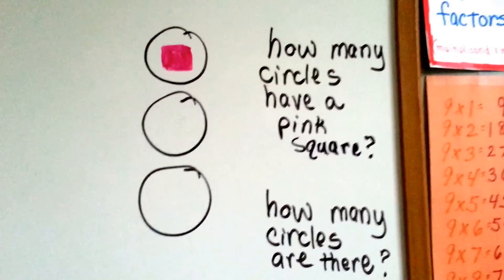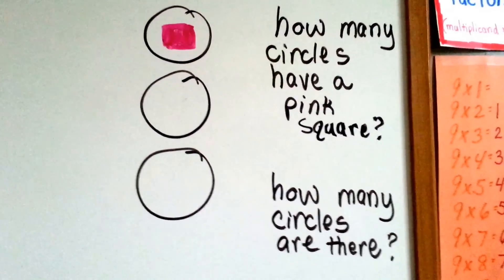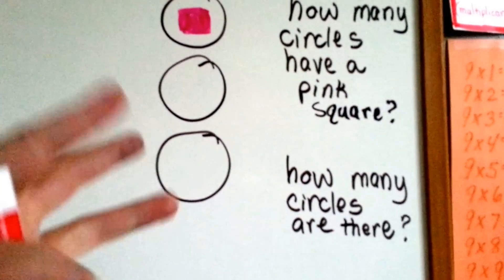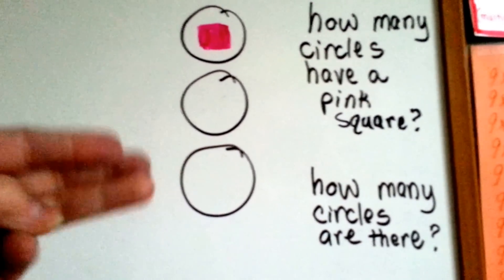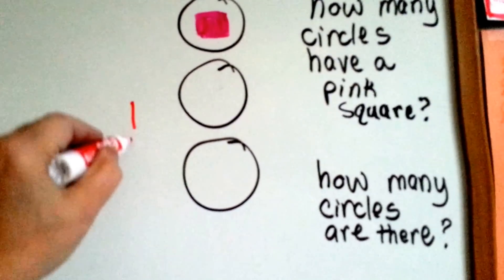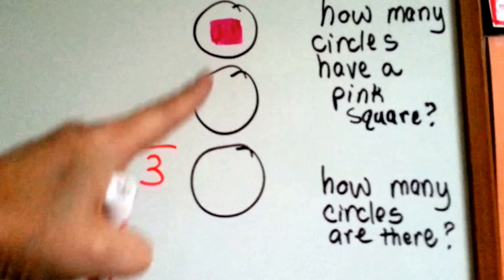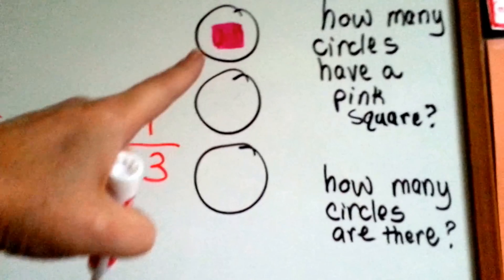Let's look at this. How many circles have a pink square? Just one of them. How many circles are there? One, two, three. There's three circles. One has a pink square of the three circles. One third of these has a pink square.